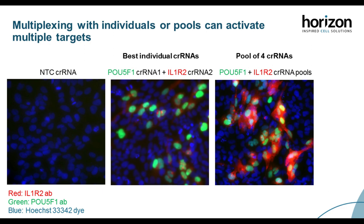These images show conditions from the multiplexed activation experiment. The non-targeting control, multiplexed individuals, and multiplexed pooled samples were fixed and stained for IL-1R2 in red and POU5F1 in green, with a nuclear dye in blue. The center image with individual CRISPR RNAs shows good overlap of both genes being detected and expressed. When the pools are used, we see increased expression of IL-1R2 in red, in agreement with the RT-qPCR data.